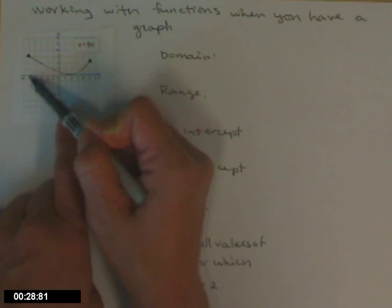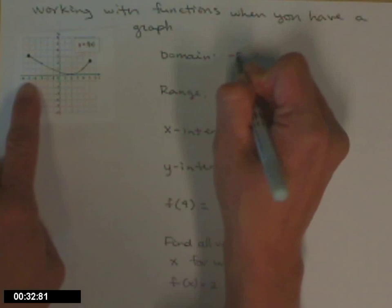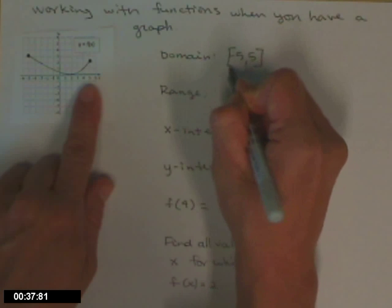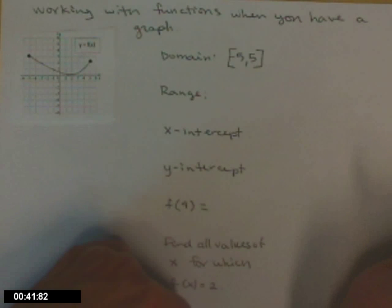So this domain, the set of x's where my graph starts, is at x equals negative 5, and they go all the way over to where x equals positive 5. The 5's are included, again those big dots, so we're going to put brackets on the 5's.